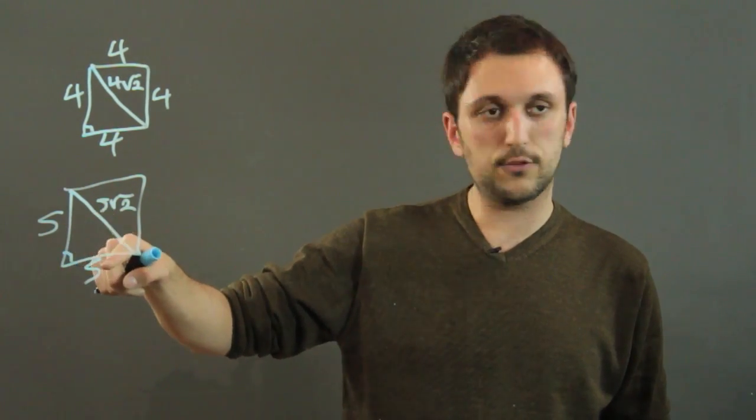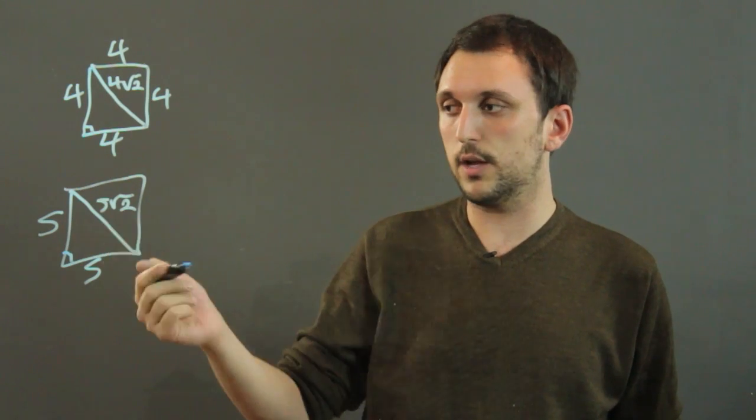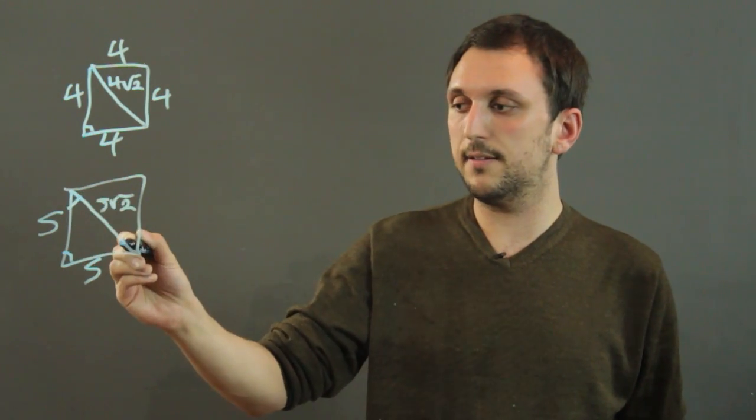So if two sides are equal, that means that it's isosceles. If there's also a right angle, it's an isosceles right triangle. So this would be 45, and this would be 45.